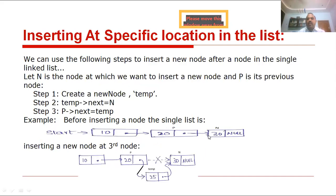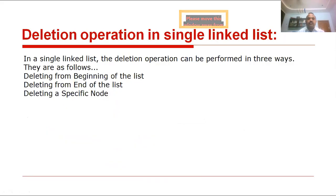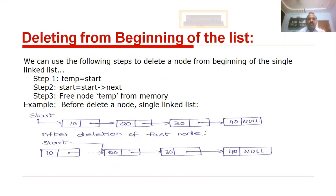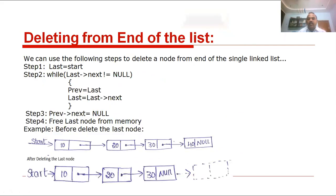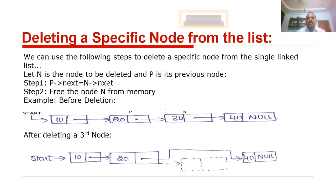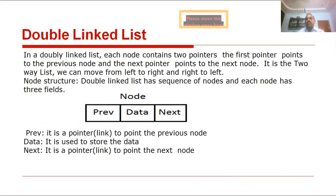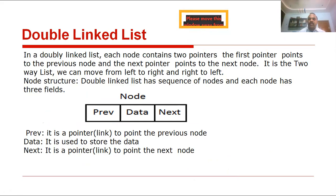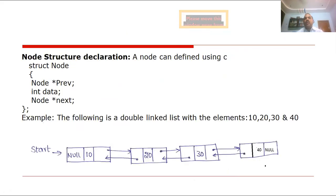Inserting at a specific location, then deletion operation: deletion from the beginning of the list, deletion from the end of the list, deletion at a specific location. Next is the double linked list, where each node has three parts. The first part is 'previous' — a pointer variable holding the address of the previous node. The middle one is the data part. Then the next one is also a pointer variable holding the address of the next node.